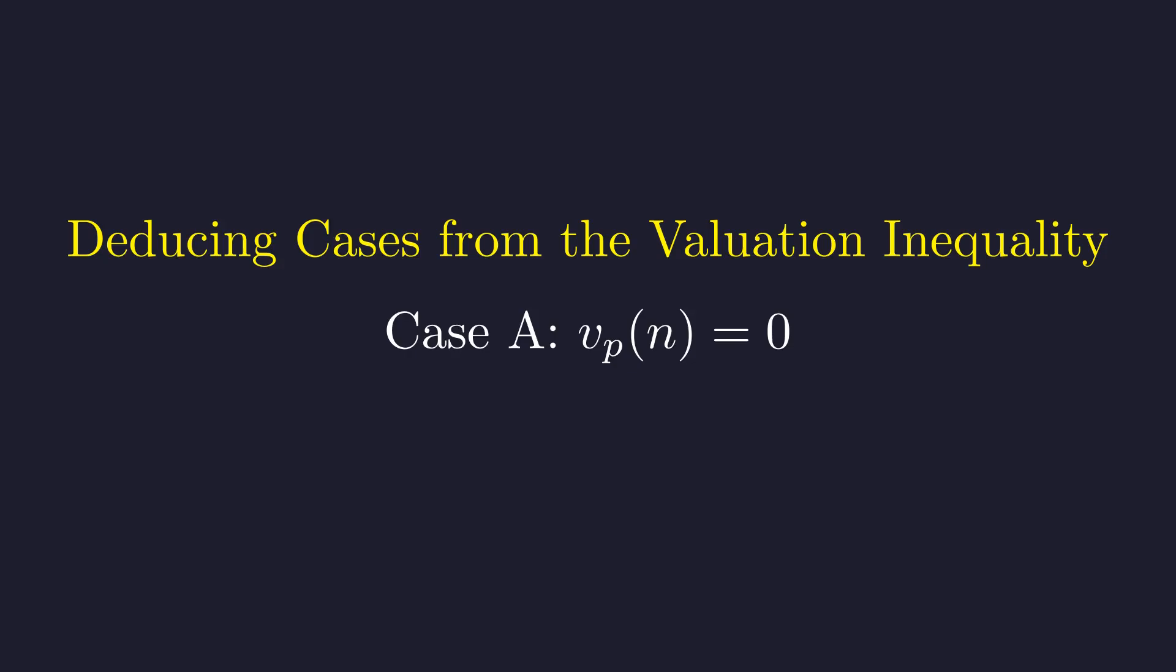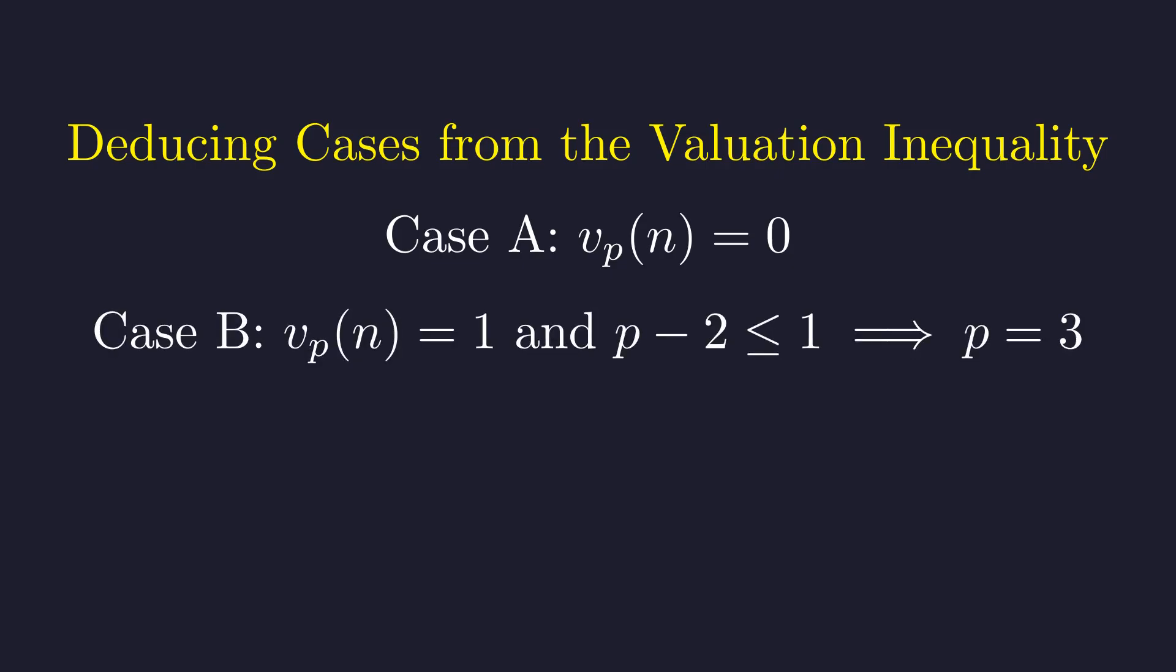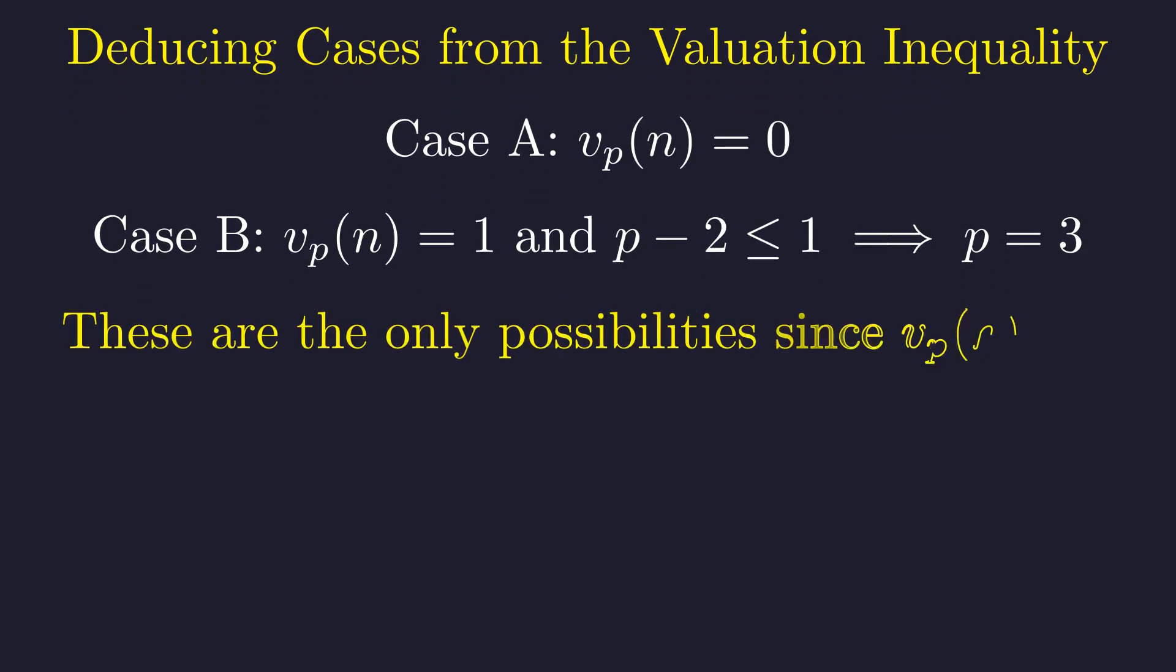Case A: v_p(n) equals 0. This satisfies the inequality as (p-2) times 0 is less than or equal to 1. Case B: v_p(n) equals 1. For the inequality to hold, p-2 must be less than or equal to 1, which forces p to be 3. These cases are exhaustive. If v_p(n) were 2 or greater, the inequality (p-2) times 2 is at most 1 would be impossible for any prime p ≥ 3. Therefore, only these two cases can occur.